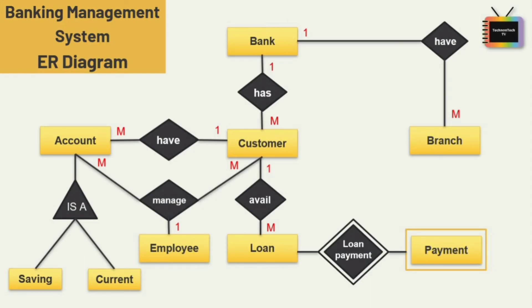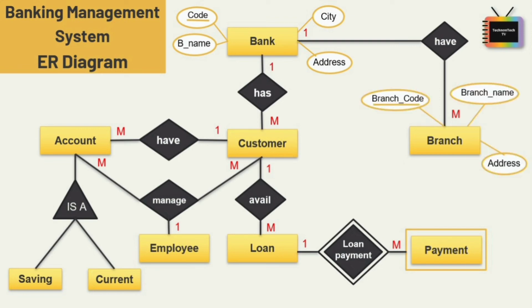Now let's look at the attributes. For the entity bank, the first attribute is code — code is the key attribute — and the second attribute is bank name, then city and address. Next is the entity branch, which has three attributes: branch code, branch name, and address. Branch code is the key attribute here.